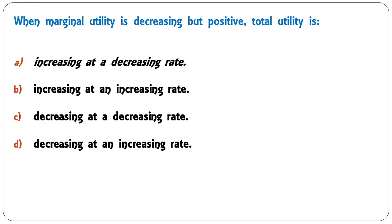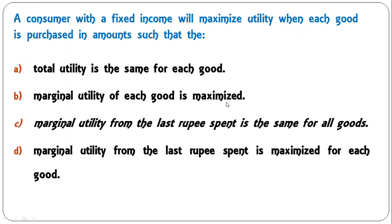Next: 'A consumer with a fixed income will maximize utility when each good is purchased in amounts such that' — the total utility is the same for each good; the marginal utility of each good is maximized; the marginal utility from the last rupee spent is the same for all goods; or the marginal utility from the last rupee spent is maximized for each good? The correct answer is C: marginal utility from the last rupee spent is the same for all goods.